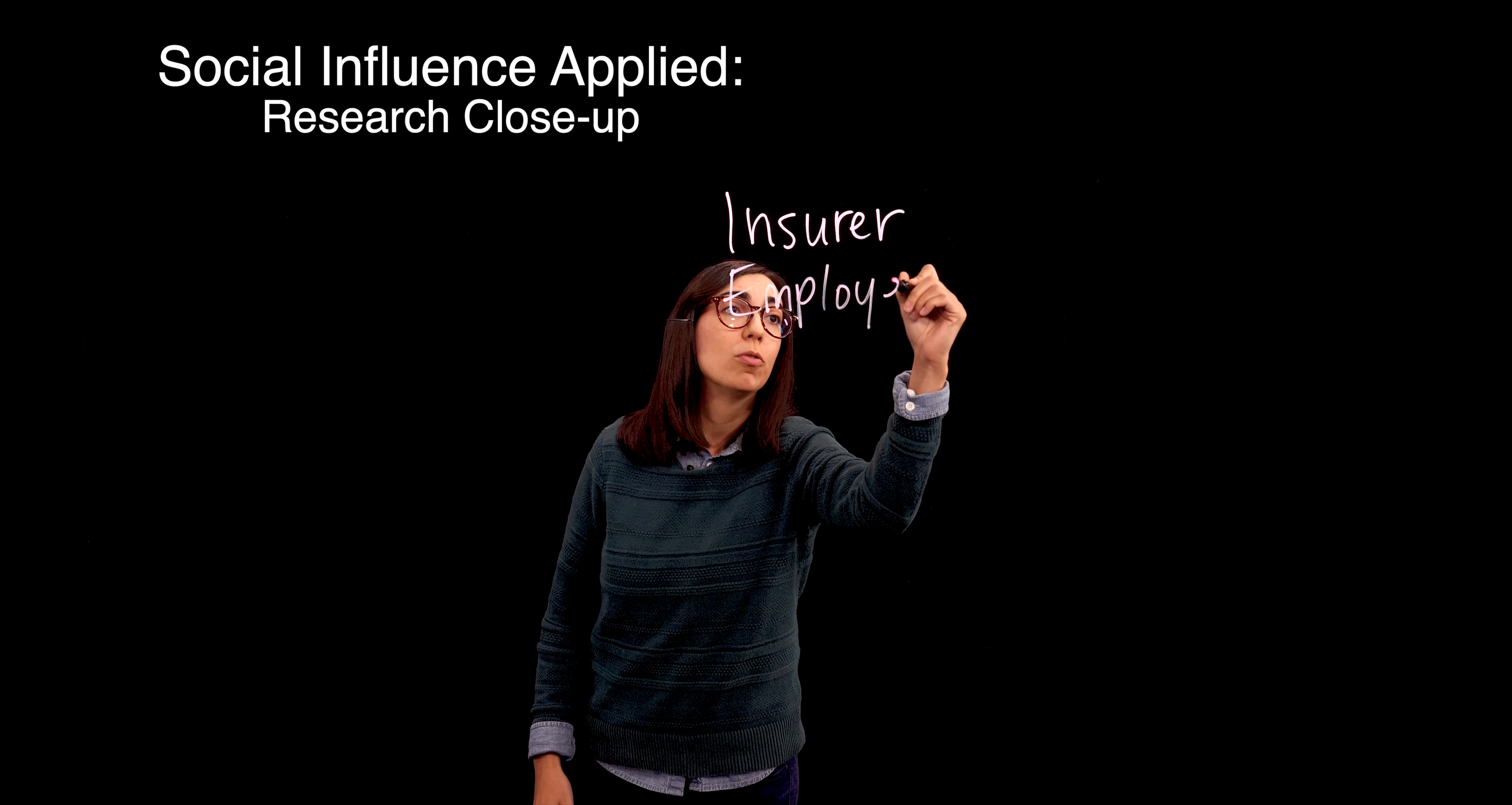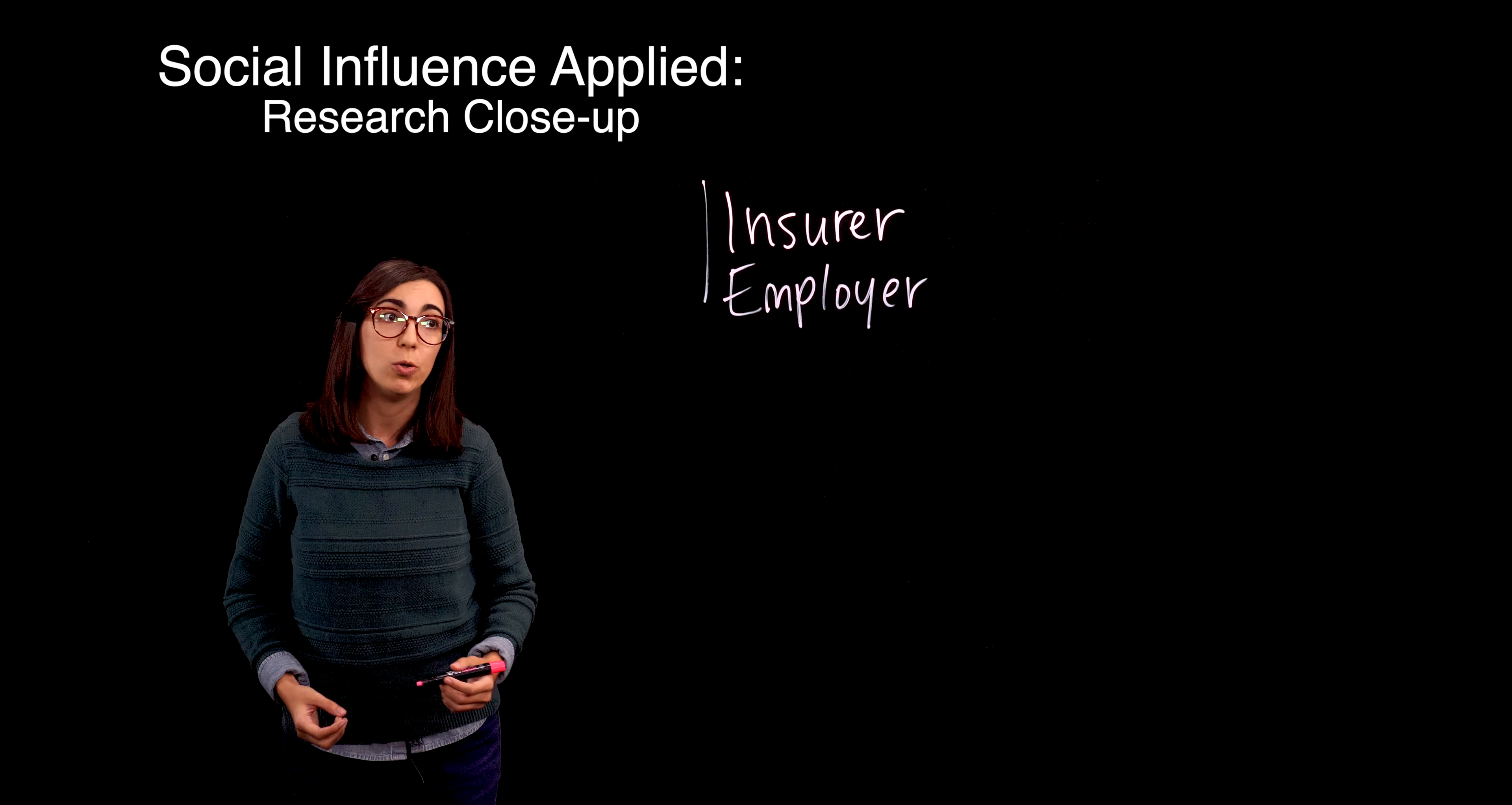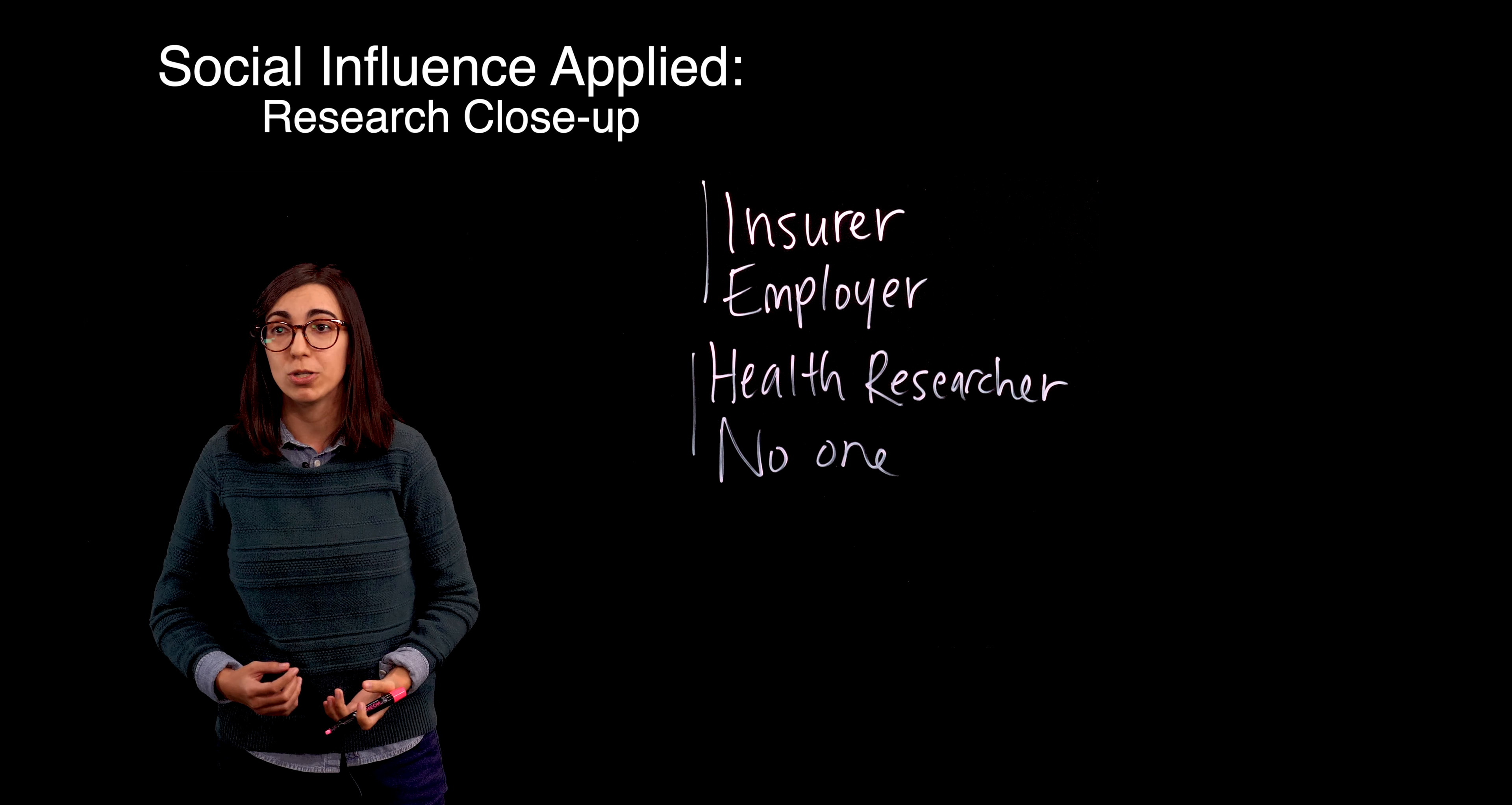And these represent two groups of people that are high in power. They are powerful groups of people that we may not want to potentially share all of our information with. Other participants learned that if they chose to get their health risk feedback, it would be sent automatically to a health researcher database or to no one, just themselves. And these represent two groups of people that are low power. They have little reason or capacity to harm us with the information they may receive.